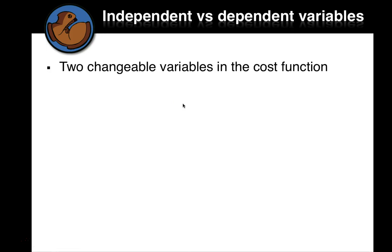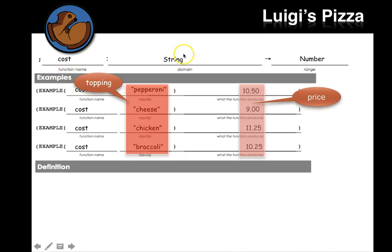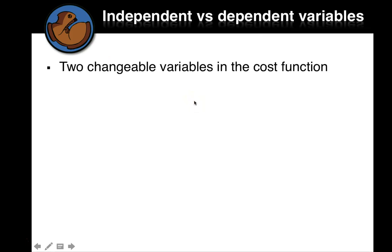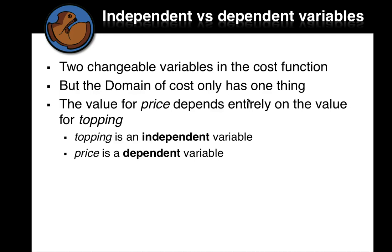So in this case, we have two changeable variables in the cost function, but the domain only has one thing, right? So the domain is just the string that represents the topping. But another variable, something else that changes is the price. So the domain only has one thing, which is the string that represents the topping. But the value for price depends entirely on the value for topping. So we could say the topping is an independent variable, and the price is a dependent variable because it depends on the topping.